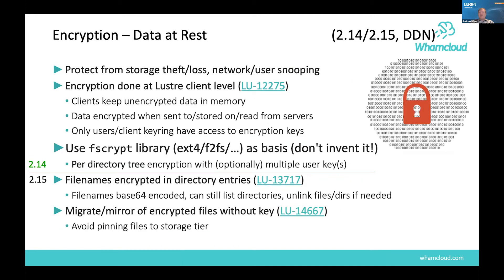Data encryption started in 2.14, implemented using the fscrypt library from the upstream kernel, which is in use on billions of Android handsets, making it a fairly robust mechanism. The same interfaces were implemented for Lustre so users can encrypt a subdirectory with keys they manage. Only data encryption made it into 2.14; 2.15 is handling filename encryption, with some issues around handling link EAs properly for fid-to-path operations.